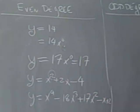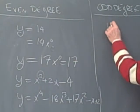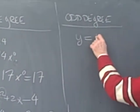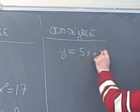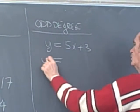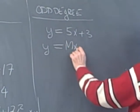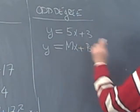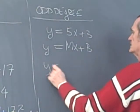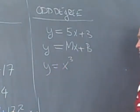That's an even degree polynomial. And for odd degree polynomials, well, we have our linear functions are odd degree polynomials. In general, y is equal to mx plus b is an odd degree polynomial. y is equal to x cubed is an odd degree polynomial.